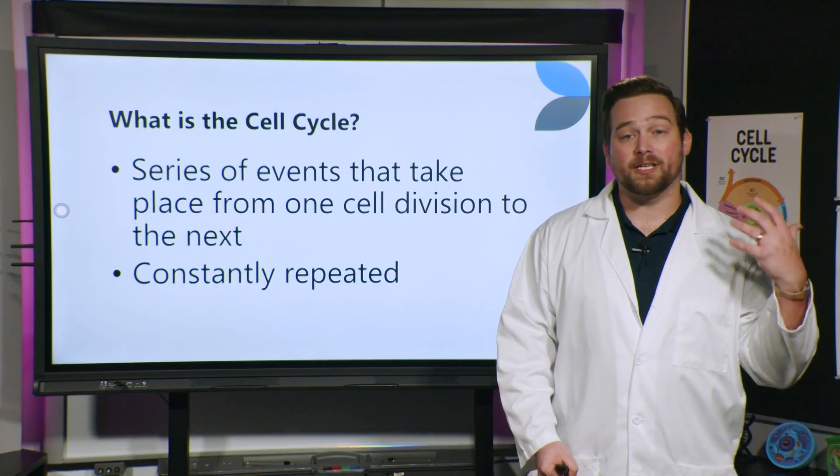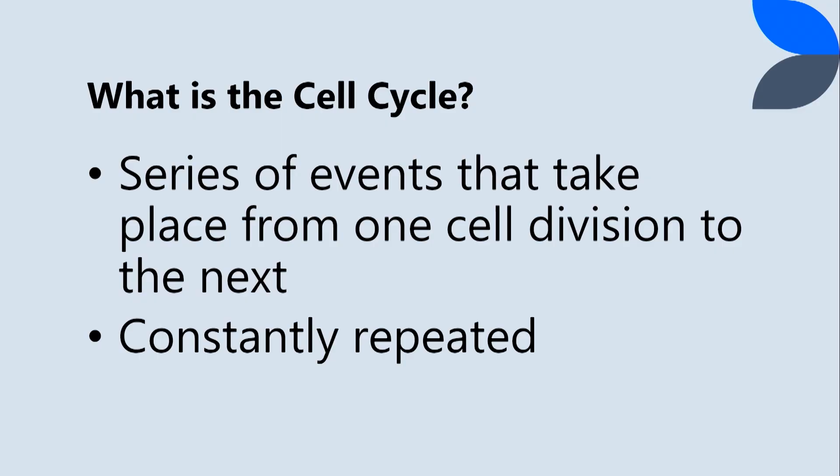Well, just as a quick reminder, what is the cell cycle? The cell cycle is a series of events that take place from one cell division to the next. And let's remember that it's constantly repeated. Just because you go all the way through the cell cycle doesn't mean that you're done. As soon as you're done with one part of the cell cycle, the next part just starts all over again.